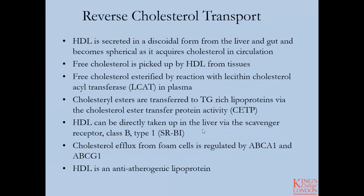Some key points on reverse cholesterol transport: HDL is secreted in a discoidal form from the liver and the gut, and it becomes spherical and more lipid-rich as it acquires cholesterol through circulation. Free cholesterol is picked up by HDL from tissues and immune cells such as monocytes and macrophages. Free cholesterol picked up by HDL particles is then esterified with the help of lecithin cholesterol acyltransferase (LCAT) in plasma. Cholesterol esters can be transported between lipid-rich lipoproteins such as VLDL and chylomicrons into HDL particles.